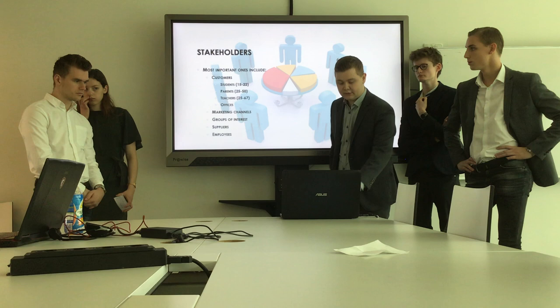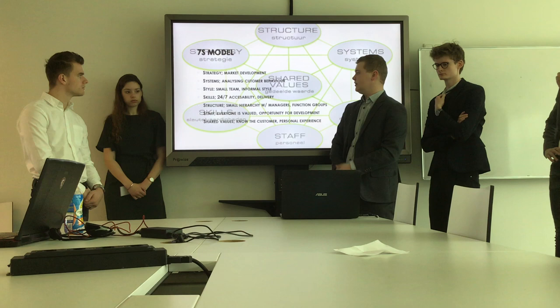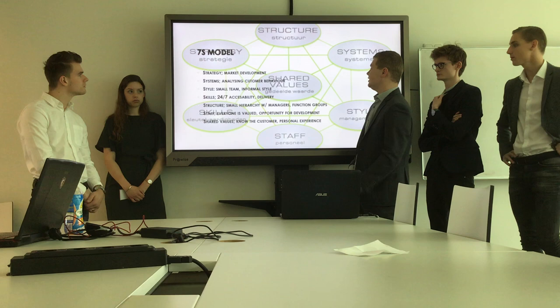Moving on to the 7S model, we analyzed the seven elements of our company: strategy, systems, style, skills, structure, staff and shared values. For strategy, we decided to go for market development, which I will explain more when I describe the Ansoff and BCG matrix. Our systems mostly include analyzing and tackling customer behavior.